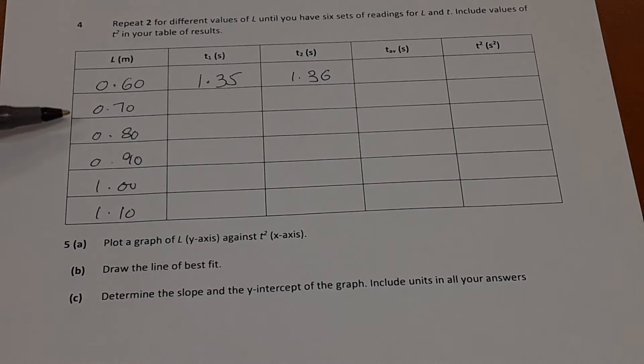So what I will do next is measure the time for L is equal to 0.70 meters. Again, do that twice and then keep working my way up from 0.7 to 0.8 to 0.9, 1.0 and then 1.1.